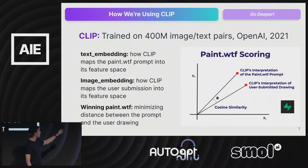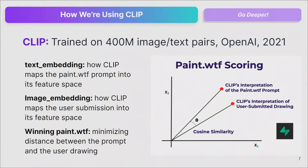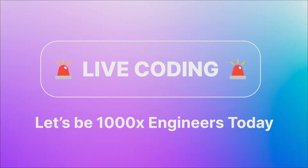Here's what our app will do: a text embedding will be produced — that's the Paint.WTF prompt, the thing we tell the user to draw. The user will draw, and we'll get an image embedding of that drawing. Then we'll do cosine similarity — whichever image embedding is most similar to CLIP's interpretation of the text is the winner. The leaderboard was powered by Supabase. So winning Paint.WTF is minimizing the distance between the prompt and the user drawing.